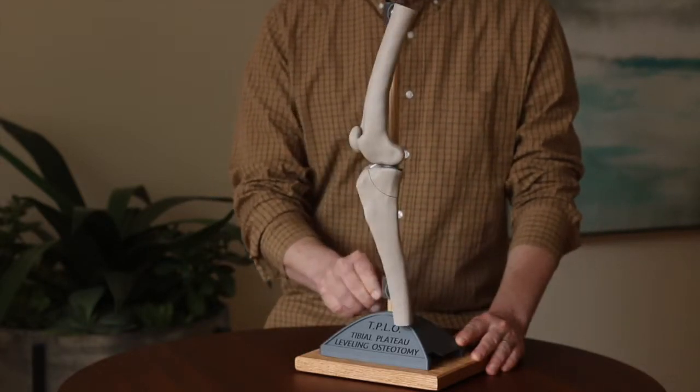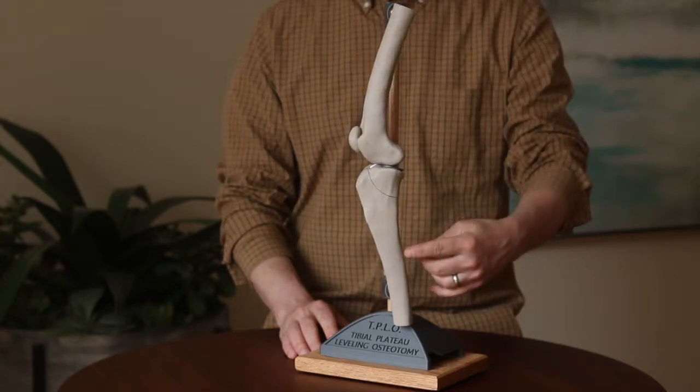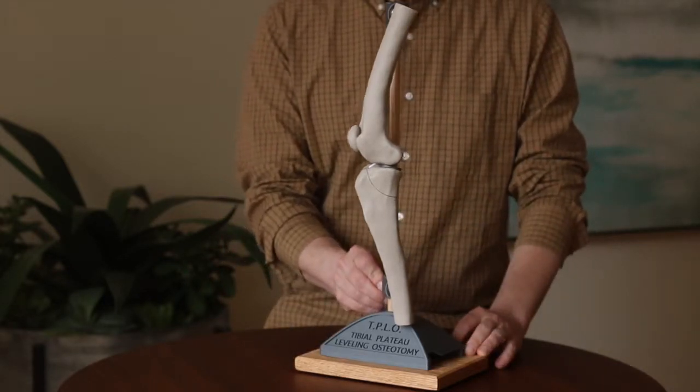In humans we stand with the femur on top of the tibia in this position, but dogs stand at an angle of approximately that much.